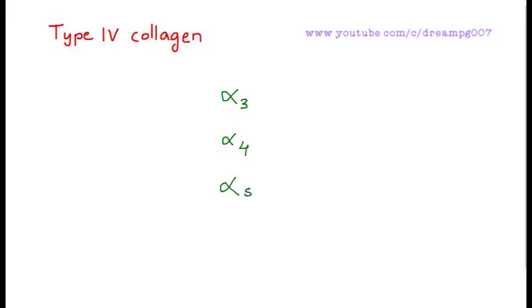Of these six alpha subunits, α3, α4, and α5 are seen in glomerular basement membrane, cochlea, and lens.